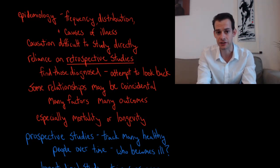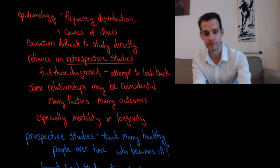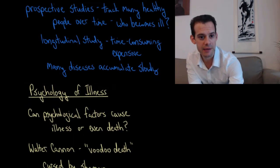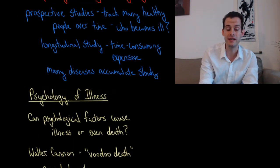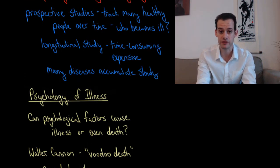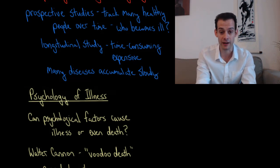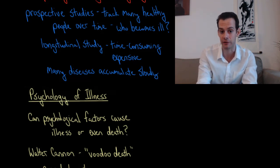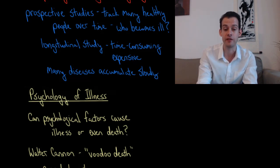Ideally, what we do instead are what are called prospective studies. In a prospective study, we track many healthy people over time and see who becomes ill. We measure variables over time in healthy people, then see which people develop which illnesses, and since we've already recorded a track record of the variables we think might be related, we can look for actual patterns.